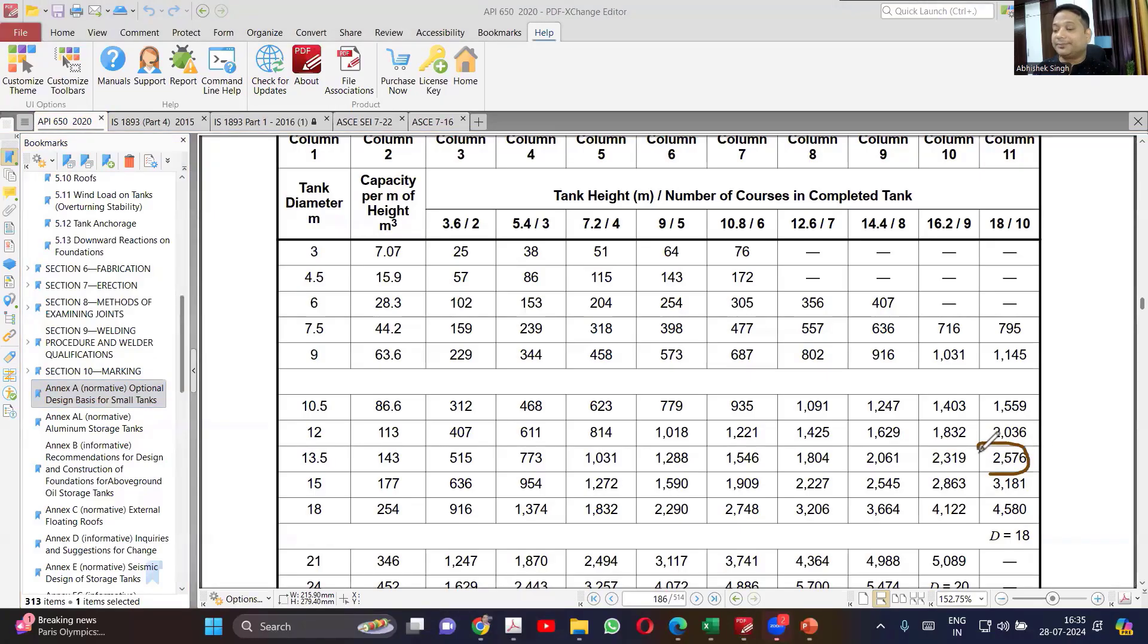How will we be doing the selection if I want to follow this Annexure A? So you will be taking the standard - you cannot select anything. You have to go with the dimensions which are mentioned here.